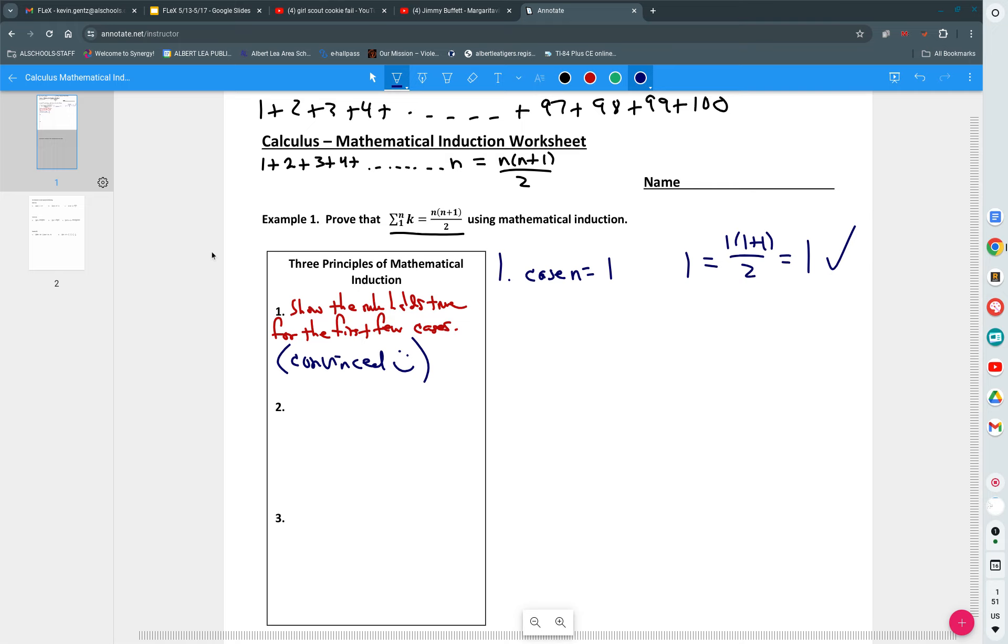I'm not convinced yet. Like, maybe one just happened to work out. Let's try case n equals 2. So now I'm going to add up two numbers. What do the first two numbers add up to? Adds up to 3. So I have 1 plus 2 is going to have to come out to be 3. Let's see if the formula works. We added up two numbers, so I plug in 2 for n. Two times two plus one divided by two. And I do get 3. Yeah, I'm a little bit more convinced.